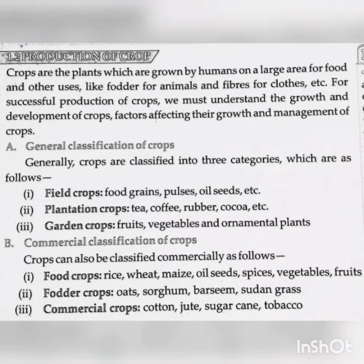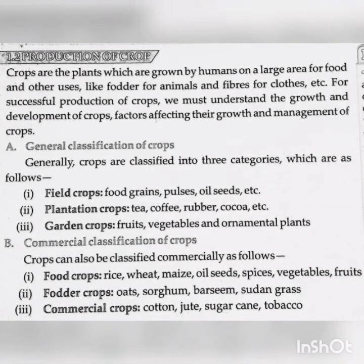Commercial classification of crops: crops can also be classified commercially as follows. First, food crops — for example, rice, wheat, maize, oil seeds, spices, vegetables and fruits. Second, fodder crops — example: oats, sorghum, berseem, Sudan grass. Third, commercial crops — example: cotton, jute, sugarcane and tobacco.